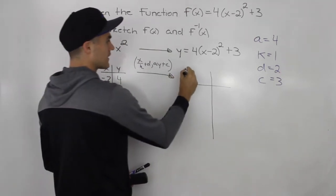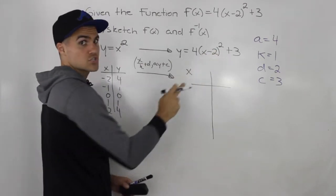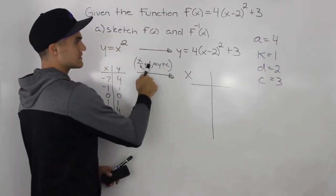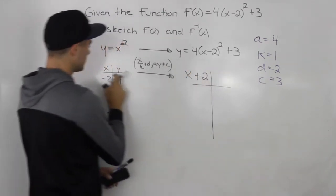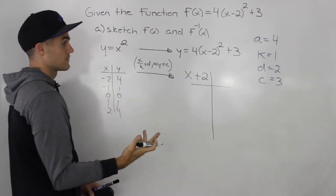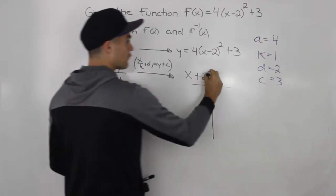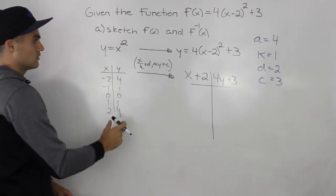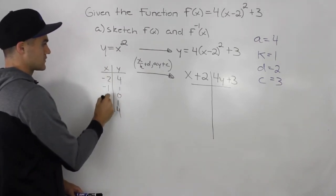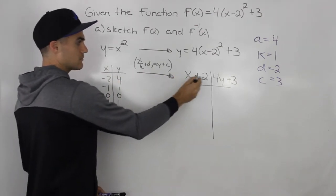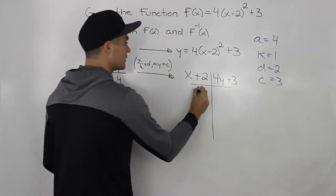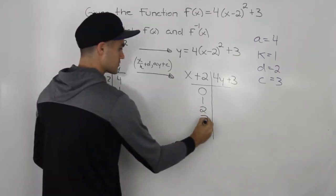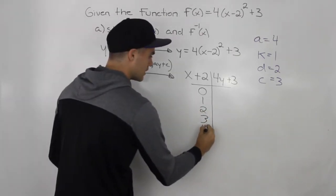For the x values, we divide by k which is 1, so x stays the same, and then add d which is 2. So we're just taking all the x values and adding 2. Negative two plus two is zero, negative one plus two is one, zero plus two is two, one plus two is three, and two plus two is four.